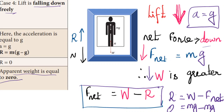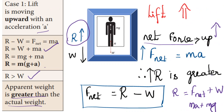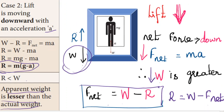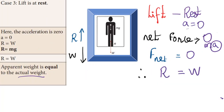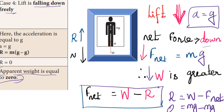In this special condition we have mass in our body but we cannot feel any weight. This free fall condition is a special case. Now repeating the four cases: Case 1 — lift moving upwards, apparent weight is greater. Case 2 — lift moving downwards, apparent weight is lesser. Case 3 — lift at rest, apparent weight equals actual weight. Special case — free fall where a equals g, apparent weight is zero, and we talk about weightlessness.